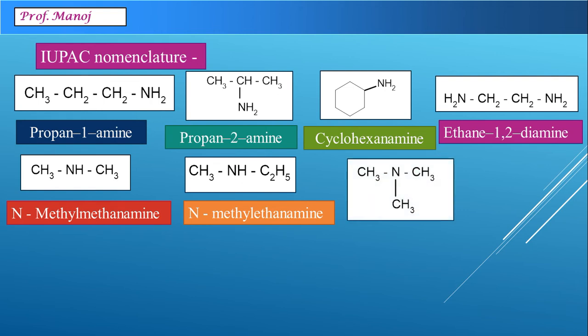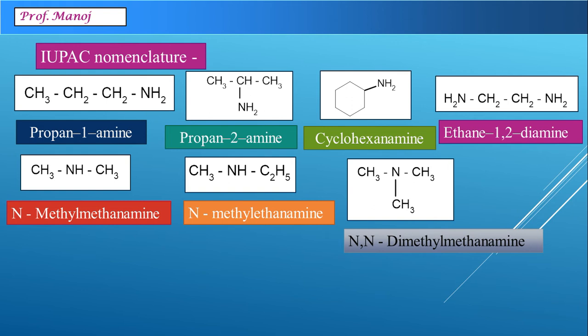For a tertiary amine, we again consider the simplest compound CH3NH2 as the parent group — that is methanamine. Two methyl groups are connected to the nitrogen atom, so the name becomes N,N-dimethyl-methanamine. Every amine compound is considered as a parent primary amine, and the groups connected to nitrogen are treated as side chains.